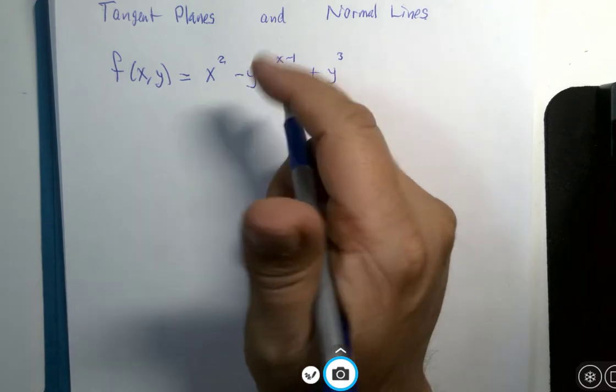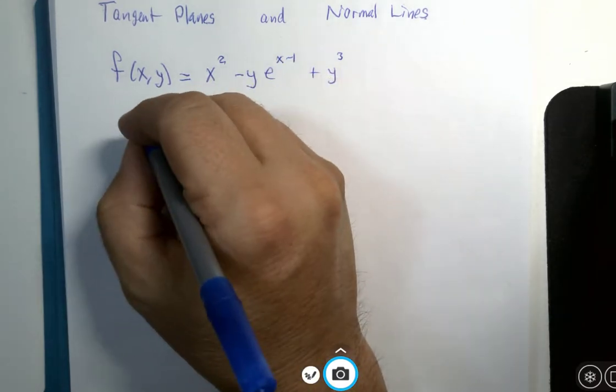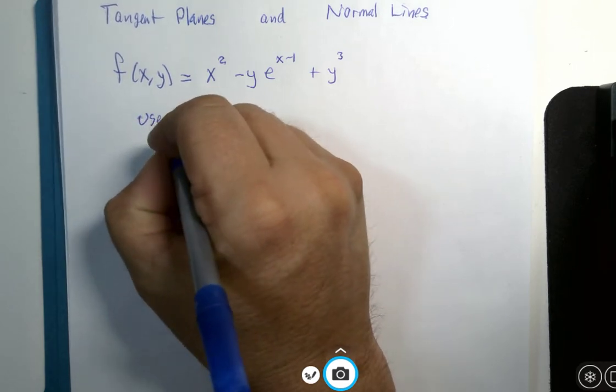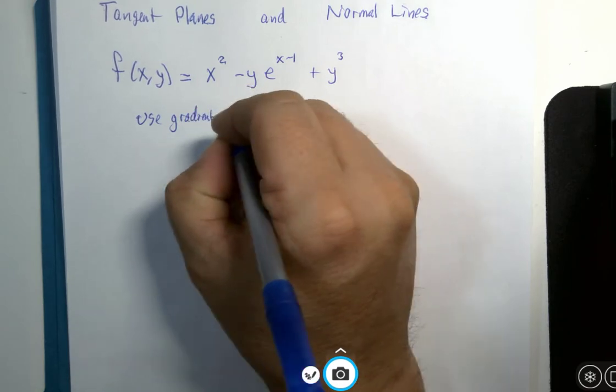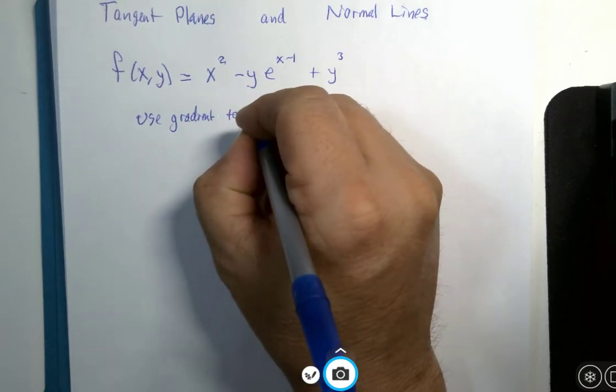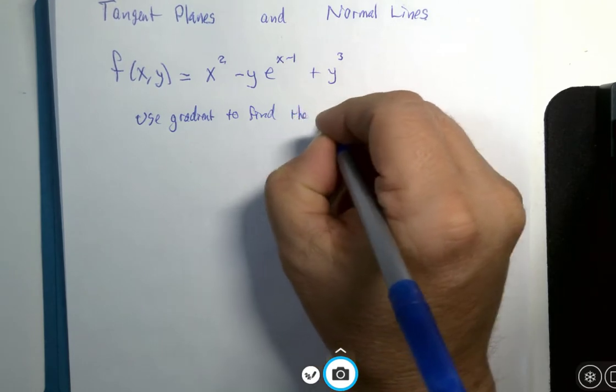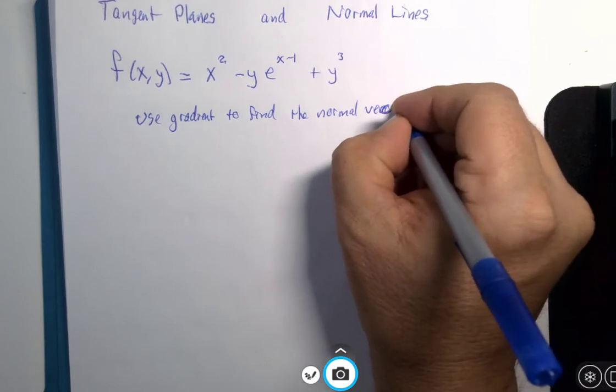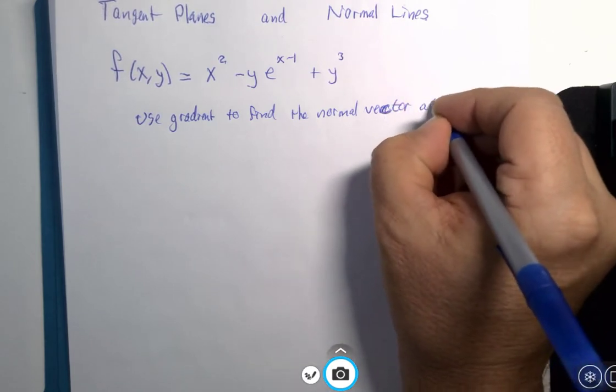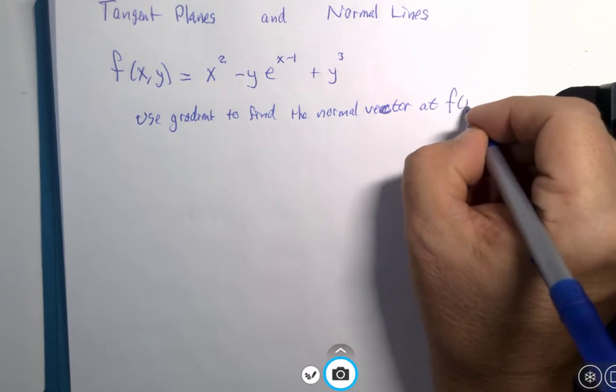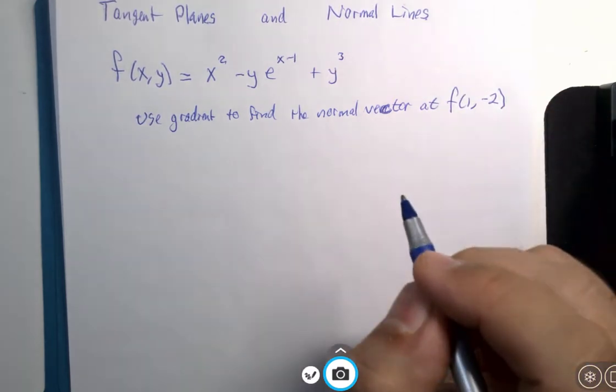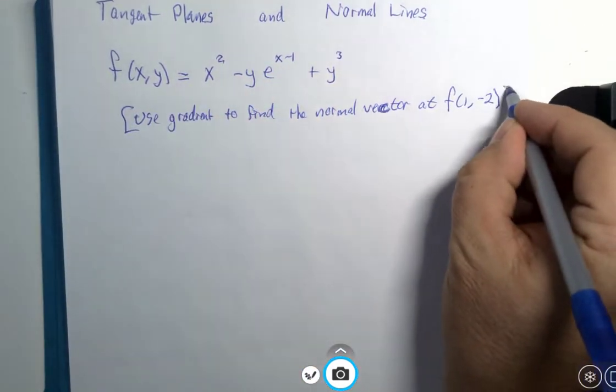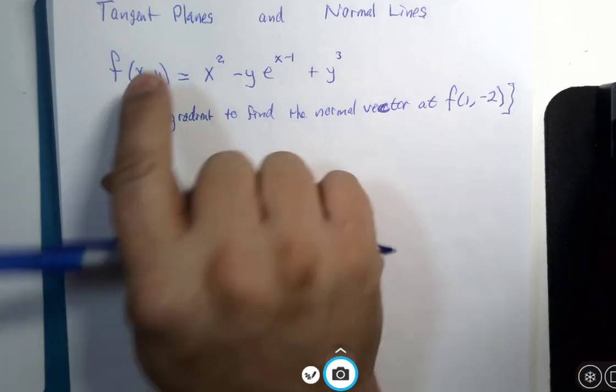We are going to use the gradient to find the normal vector at f of 1, negative 2. This is kind of the given information that will lead me to this.